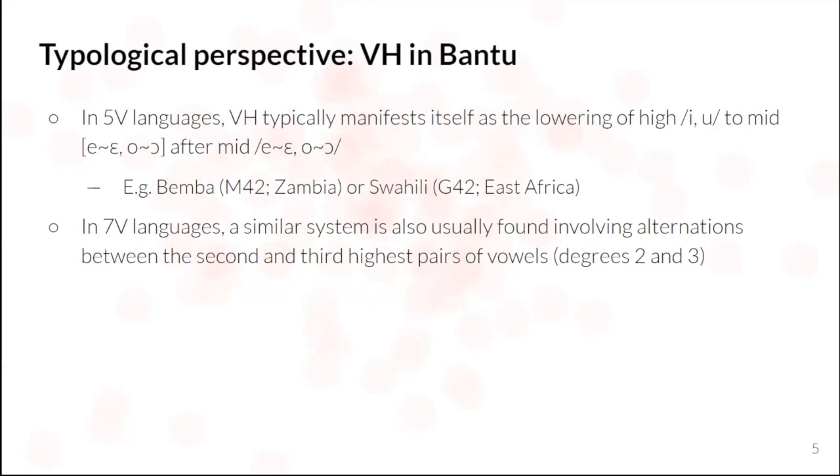And then in the seven vowel language, we have a similar system. But the alternations typically involve the second and third highest pairs of vowels, what we call degree two and three vowels, as opposed to involving the higher, the first degree vowels, the highest of the vowels. And this is what we get, for example, in Rangi or Kikuyu. And I'll show you some examples of this in a second.